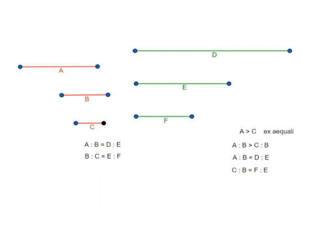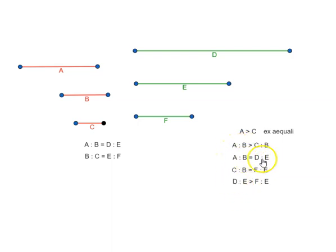That means D is to E is greater than F is to E. Here A is to B is greater than C is to B; C is to B equals F is to E; and A is to B equals D is to E. So we replace A is to B with D is to E, and C is to B with F is to E — giving us D is to E is greater than F is to E. This is based on proposition 5.7.